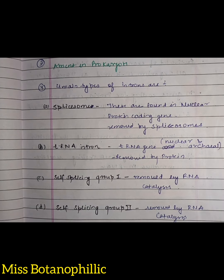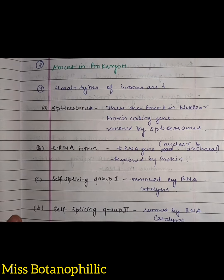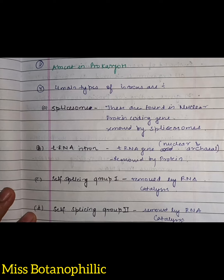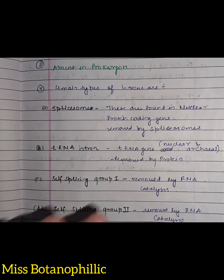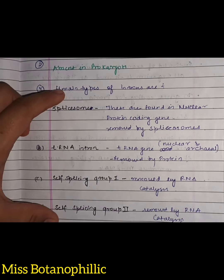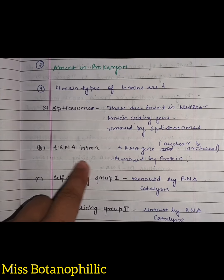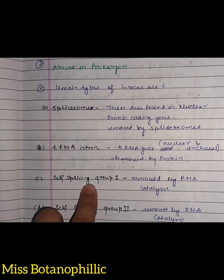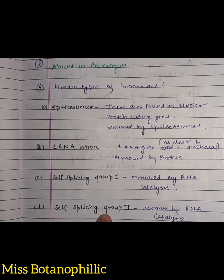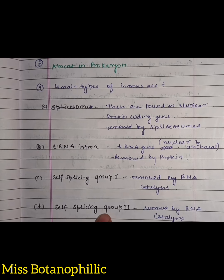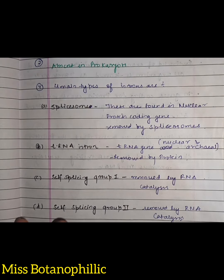So, in summary: introns are non-coding sequences present in a gene, which we remove during RNA splicing, so we call them introns. Introns are present in eukaryotes and absent in prokaryotes. We have four main types of introns: spliceosomal introns, tRNA introns, self-splicing group 1, and self-splicing group 2 introns. That covers the topic of introns.